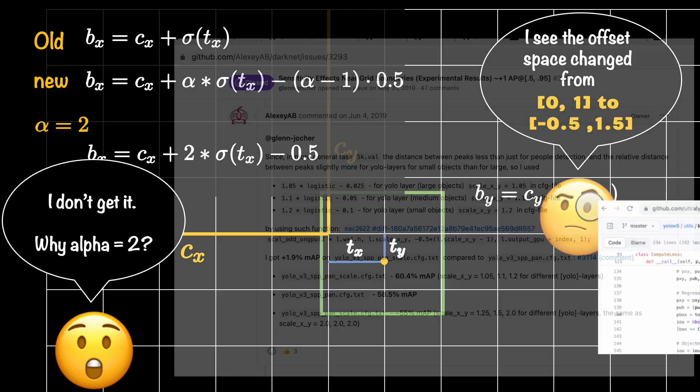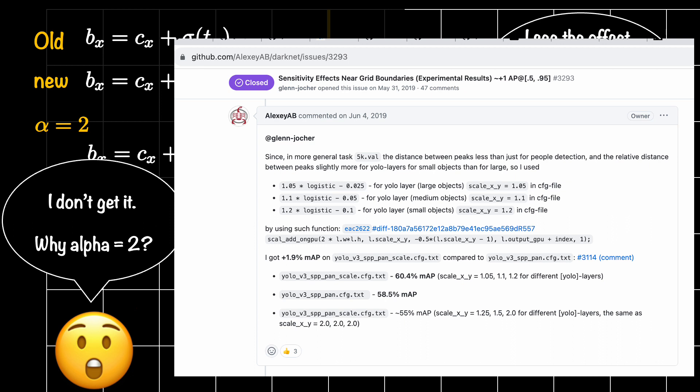And yes. And turns out there is nothing special about it. It is just a way to constrain the offset space between negative 0.5 to 1.5. If you use another value, you would constrain it differently.